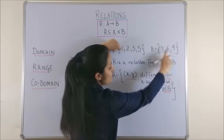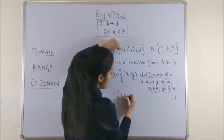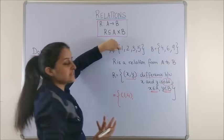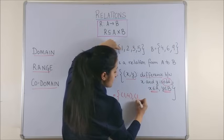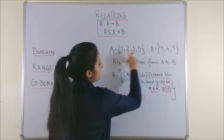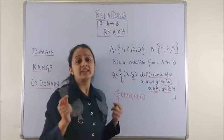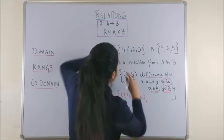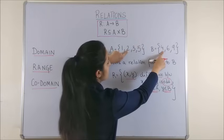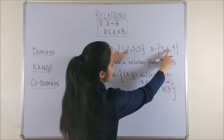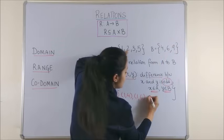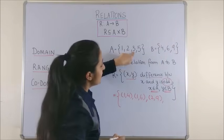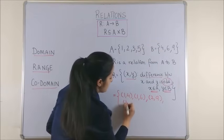So, 1, 4 becomes one of the pairs. Next, 1, 6 again gives us an odd number. So, that is also part of the given relation. Next, 1, 9 gives us an even number. So, this time it is not the part of the relation. Moving on, 2 and 4 again give us an even number. 2 and 6 even. 2 and 9 give us an odd number. So, it is a part.